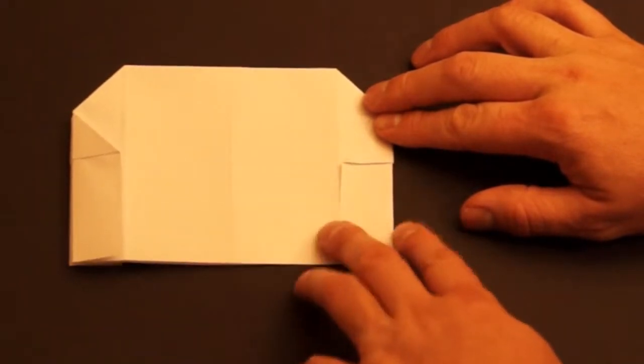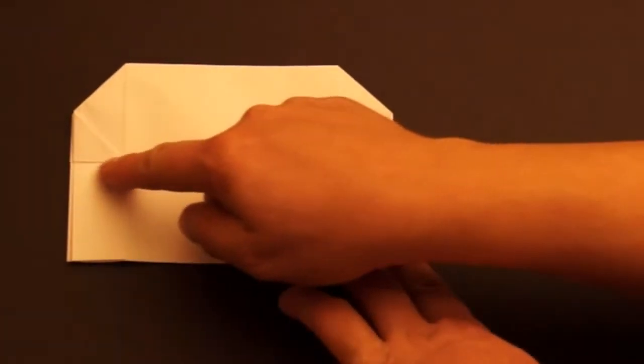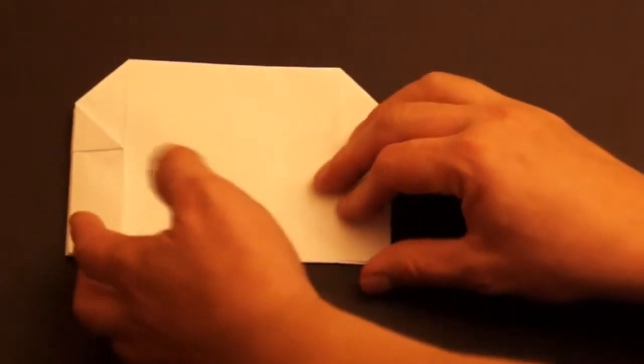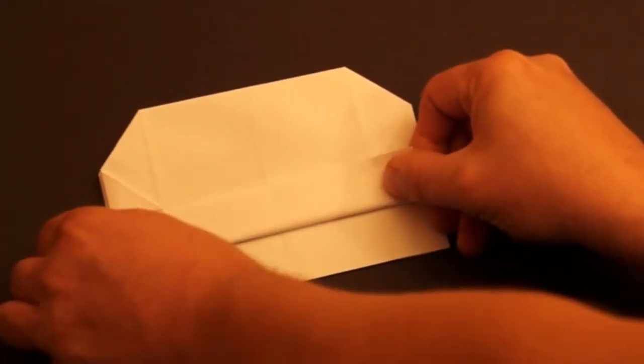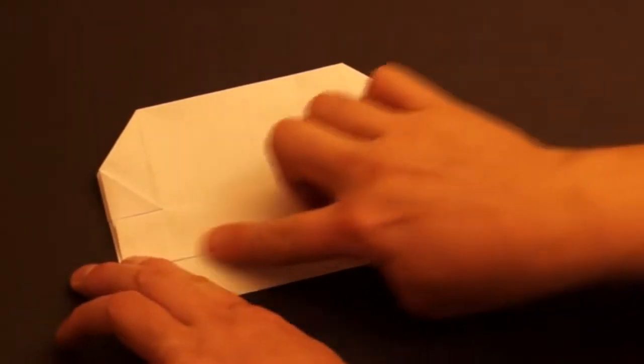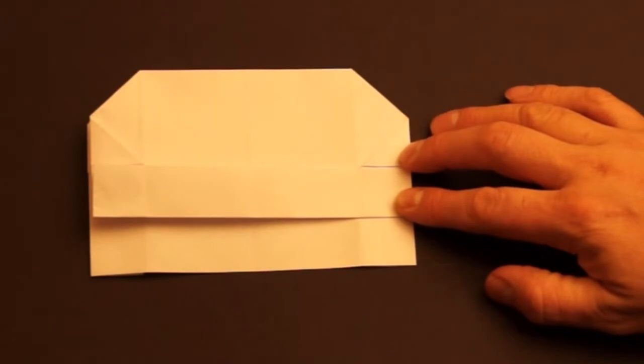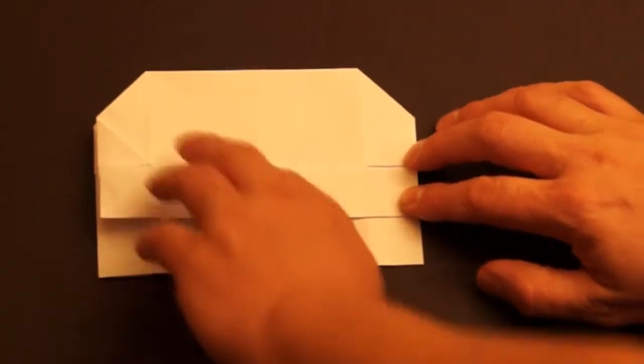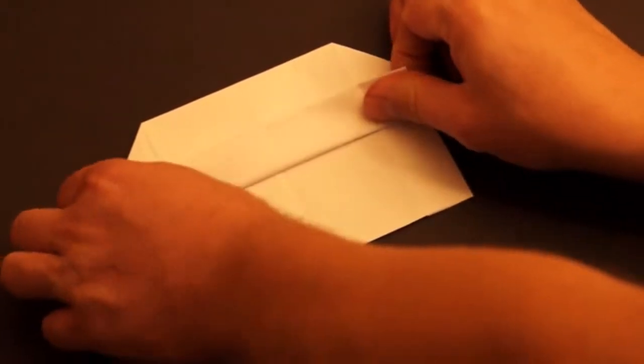Next we're going to take the bottom edge and fold it up so it's right underneath these two triangles on the sides. Then we fold it up one more time, just like that.